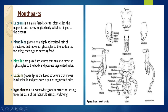Mandibles are a pair of hardened structures, also called jaws. They have two regions: a grinding region at the upper end and an incising region at the lower end. These structures move at right angles to the body and are used especially for biting, chewing, and severing food.